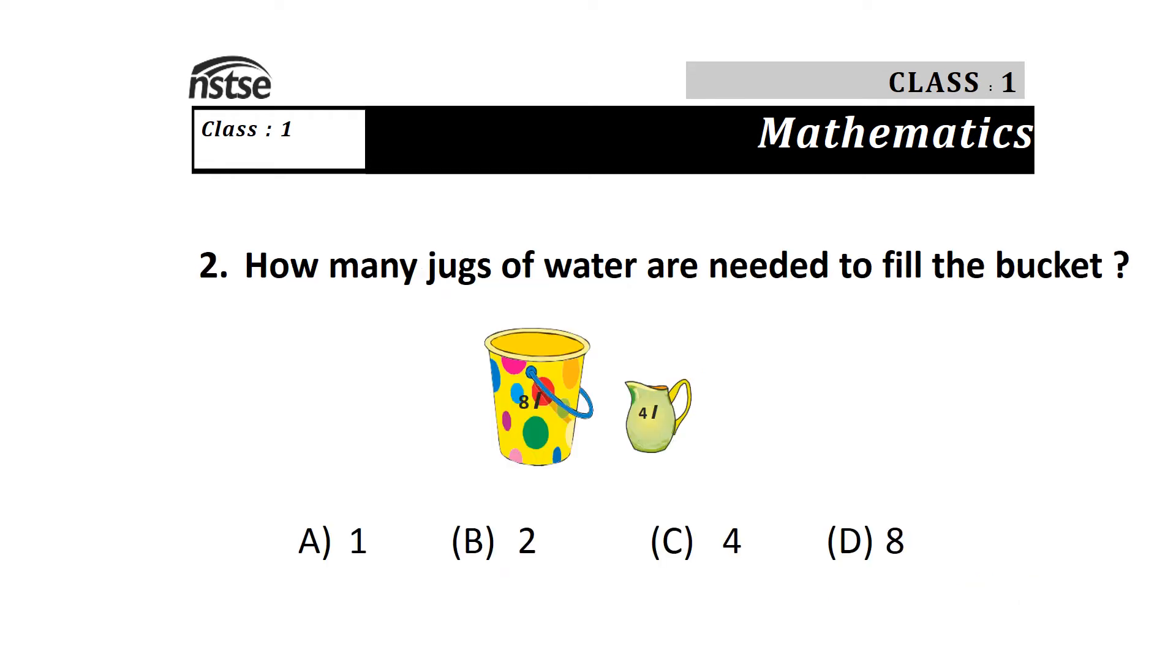Question 2: How many jugs of water are needed to fill the bucket? An 8 liter bucket and 4 liter jug are shown. The options are A) 1, B) 2, C) 4, and D) 8. We read the table of 4: 4 ones are 4, and 4 twos are 8. We will take the 4 liter jug two times to fill the 8 liter bucket, so the option is B.